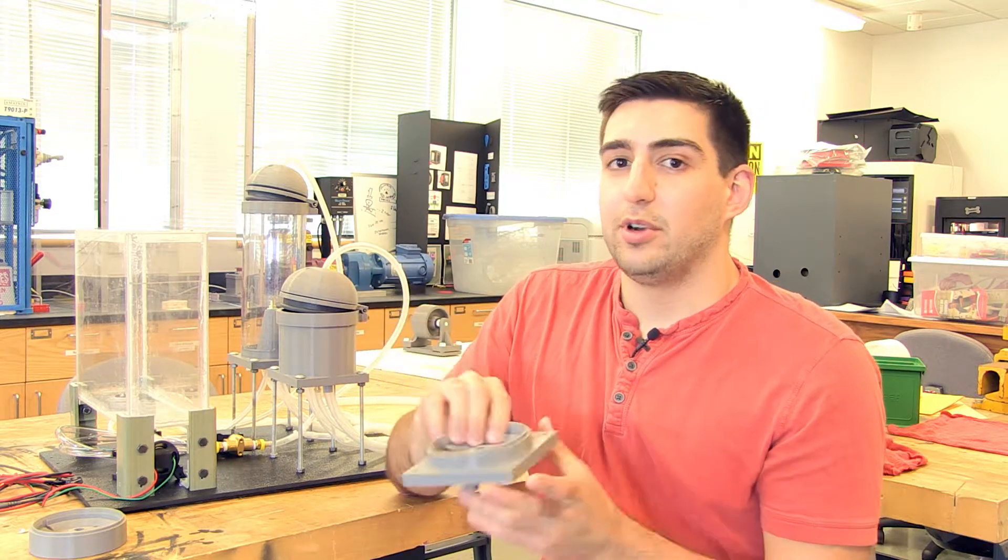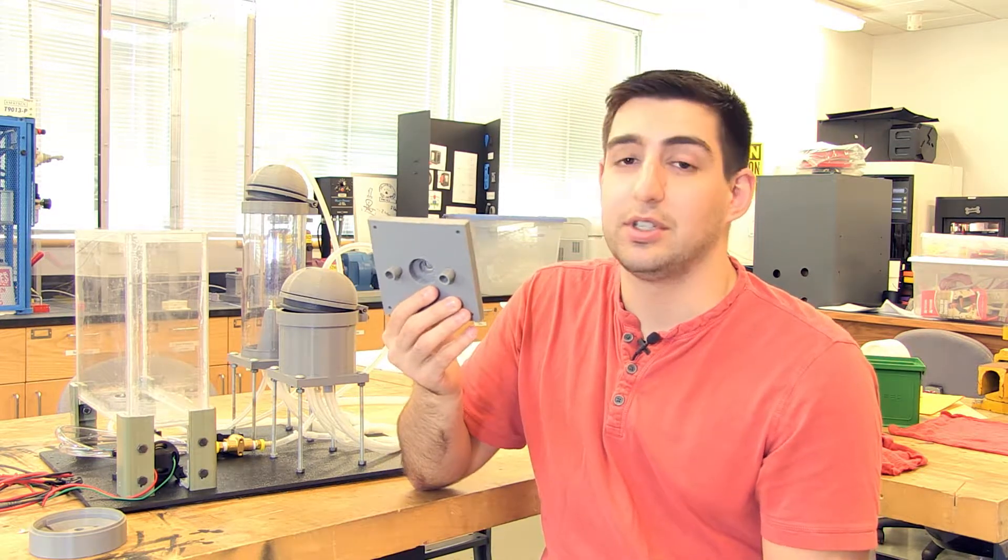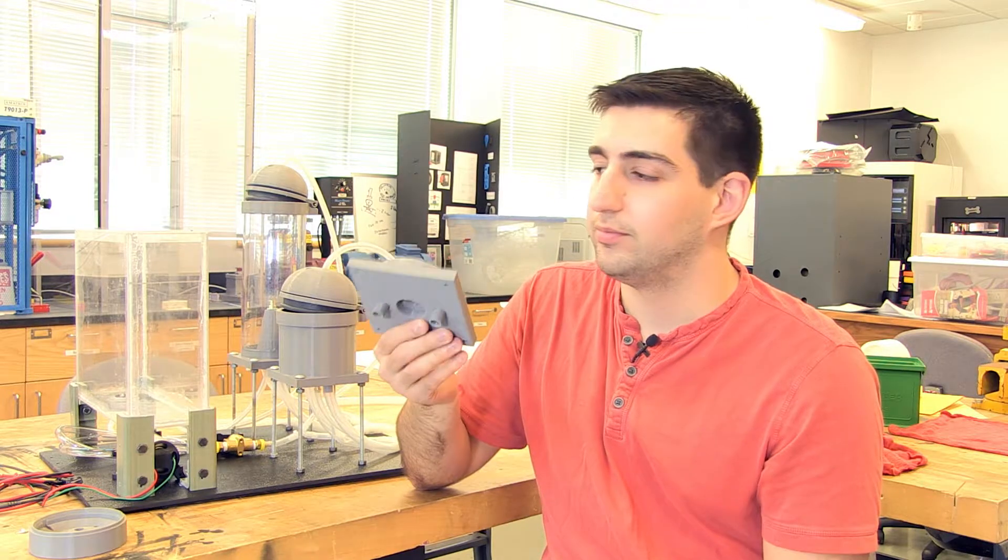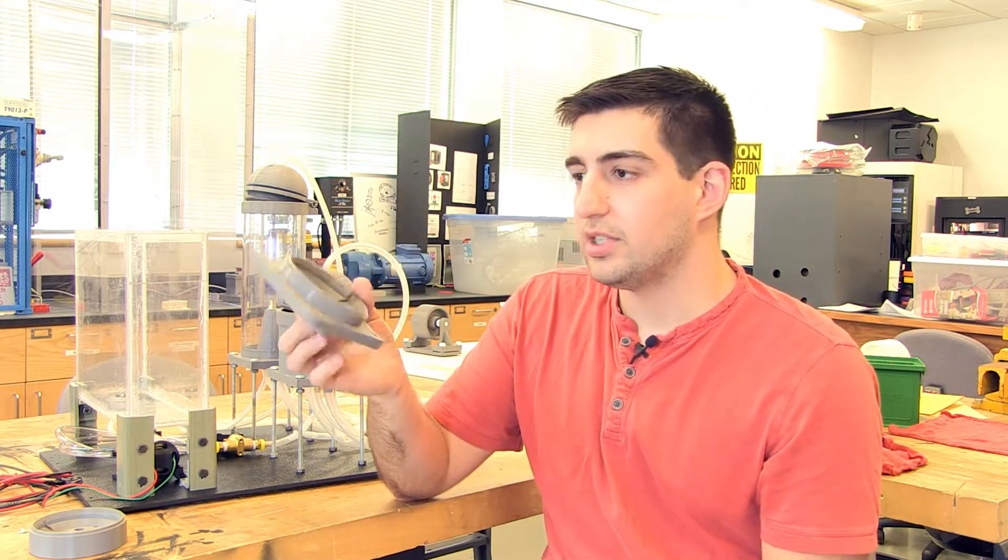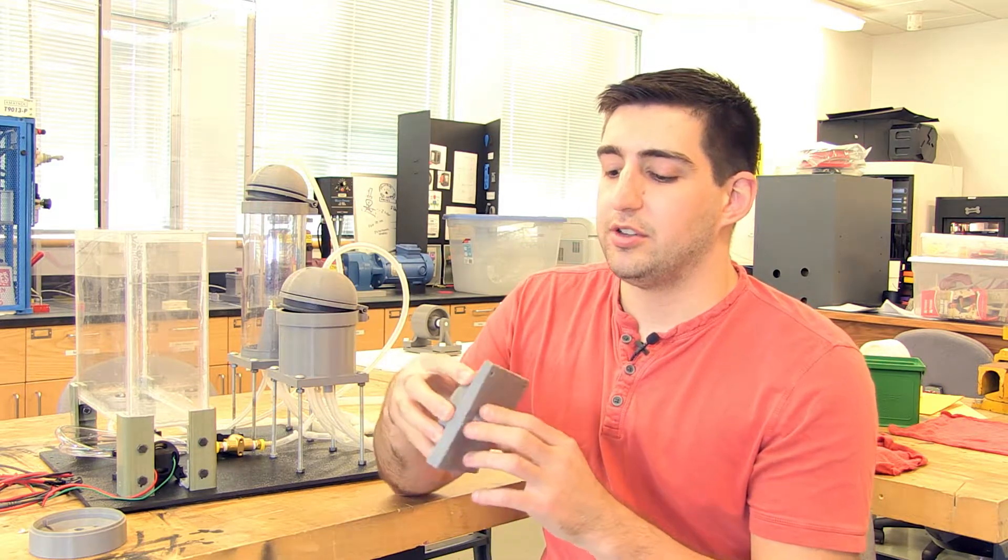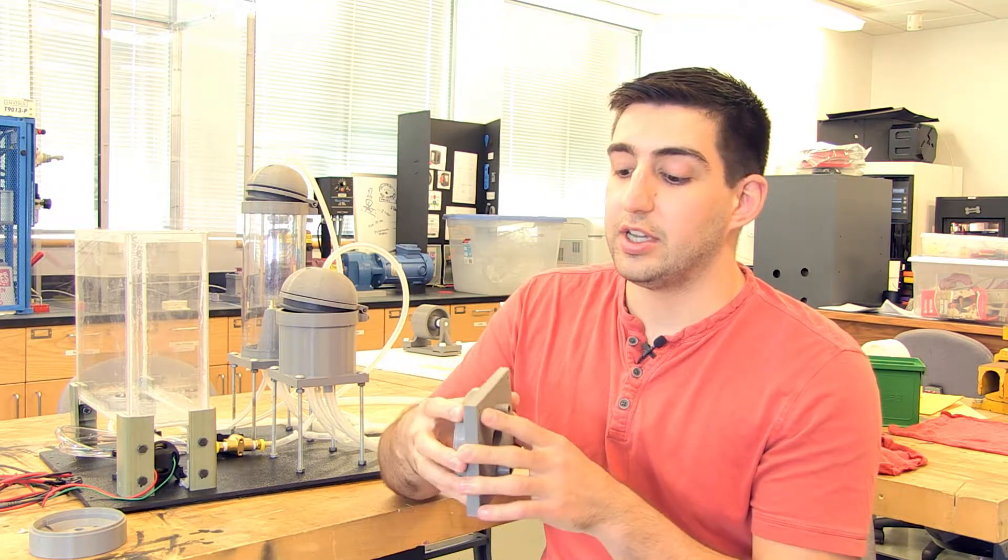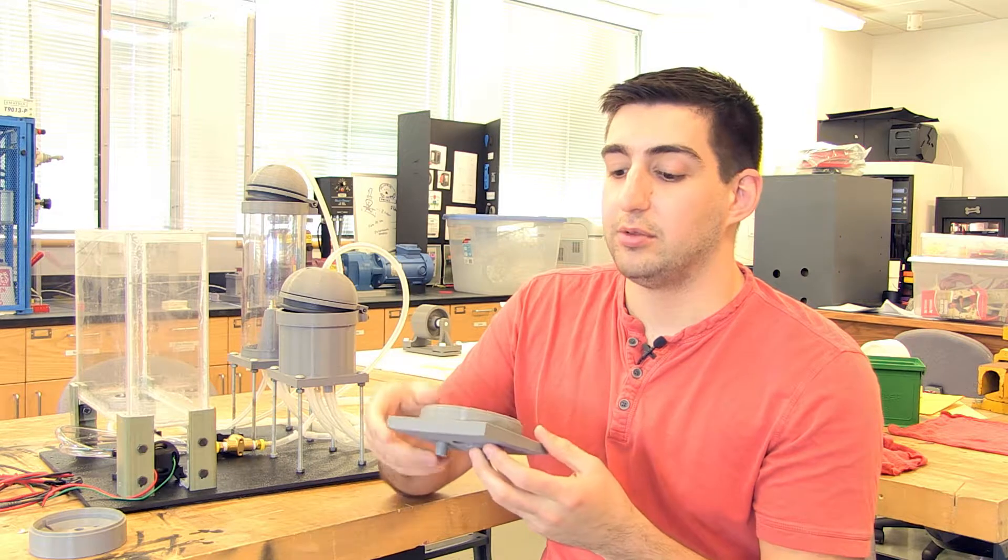So whenever we did our initial design, we were going to use a heating element. So we had to account for would the water actually melt this or warp it too much whenever we're running the actual tests. So we wanted to make sure that it wouldn't actually get hot enough to where it would melt, but it would still get hot enough to sanitize the bottle on the inside.